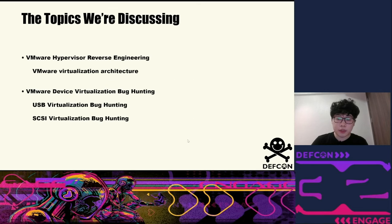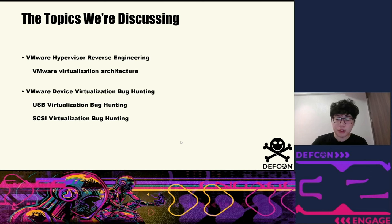So what can we bring to you today? First, we will introduce the VMware virtualization architecture. Most people hunt bugs by directly debugging virtual device code, but we chose to take a bigger view — studying it by reverse engineering the whole VMware virtualization architecture. This helped us figure out which code can be influenced by the guest OS. Later, we will use bugs we found in USB virtualization and SCSI virtualization to explain the possible sources of threats in virtual devices, which remain the most cost-effective choice in virtualization bug hunting.